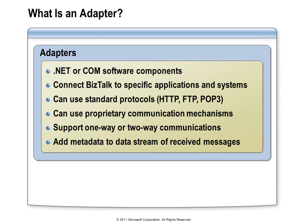An adapter might implement the details of communicating over a particular network protocol, or it might implement the details required to communicate with a particular application — in which case it is probably calling application APIs. Adapters are implemented either as .NET or COM components. BizTalk's underlying messaging engine has actually been implemented as a collection of COM components. An adapter really consists of three parts: a design time component and two runtime components. The runtime components implement sending and receiving, while the design time component is what you see in the BizTalk administration console for entering configuration settings.